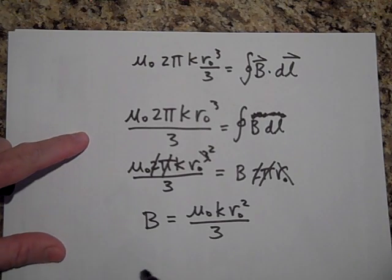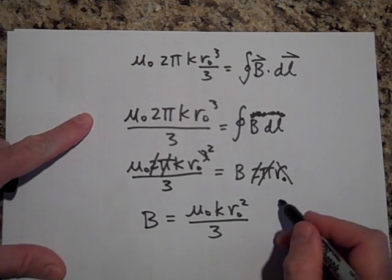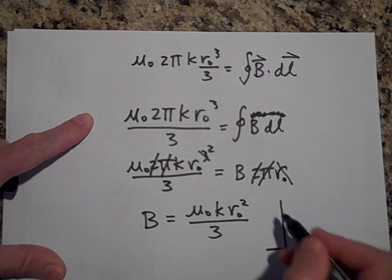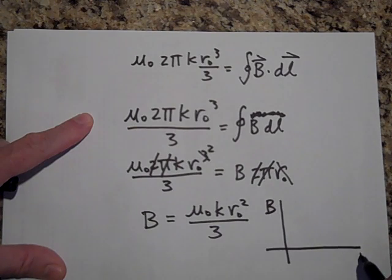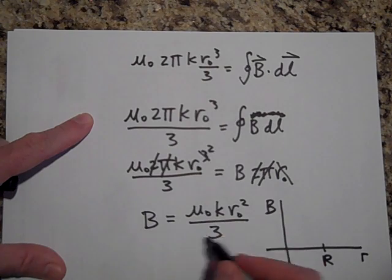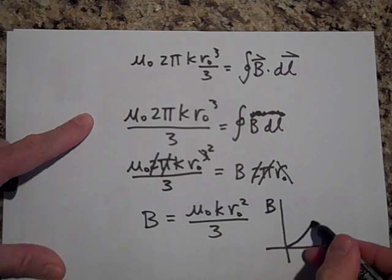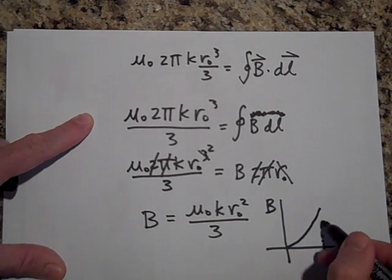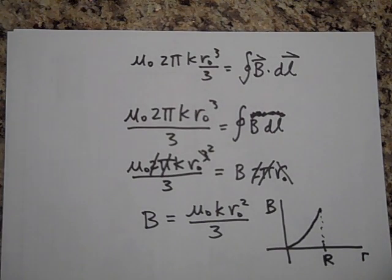So that's what the B is in there. So when I'm in there, if I were to graph that, at least all the way out to capital R, it looks like this is just a constant. It looks like it goes up like this. Outside, it's going to do something different. Thanks. Bye.